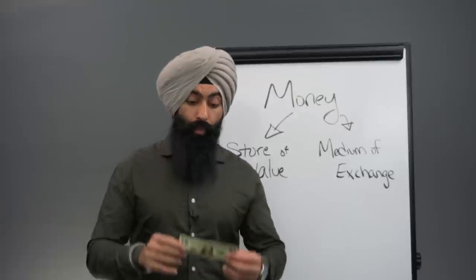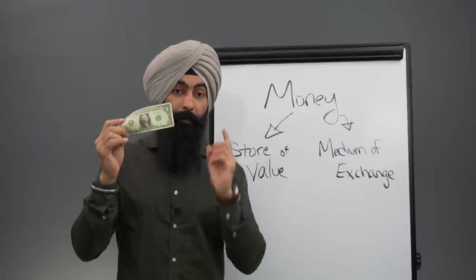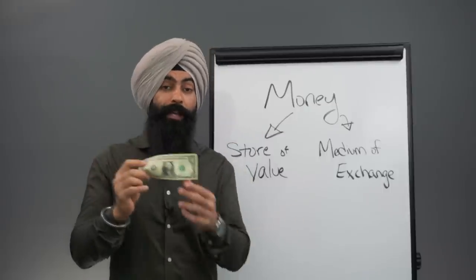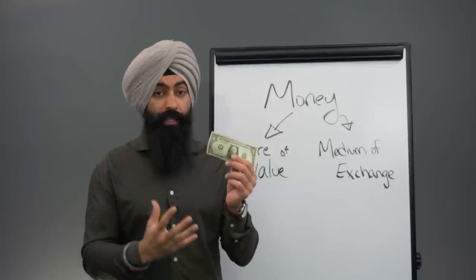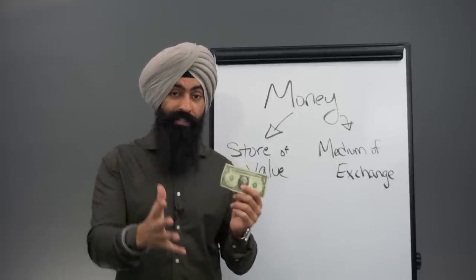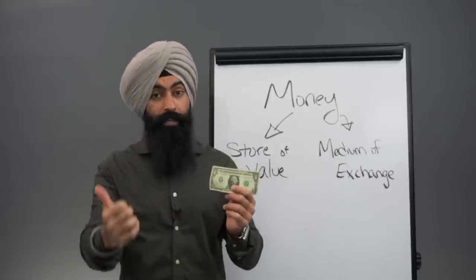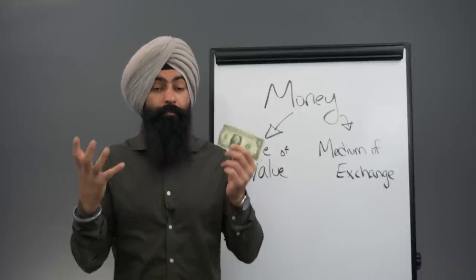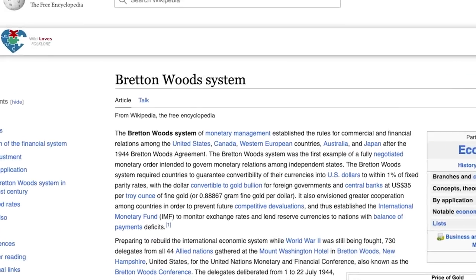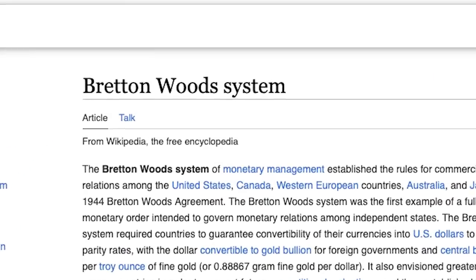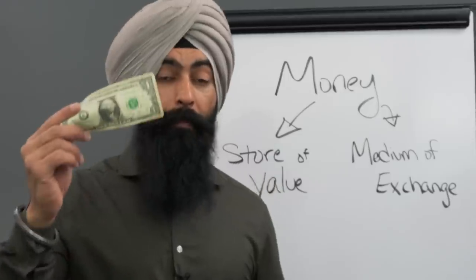Before 1971, our paper dollars were backed by gold. That meant that our governments and our central bank had to have enough gold to represent the amount of dollars out there. If the government wanted to spend more money and the Federal Reserve Bank had to print more money to fund the government spending, they would need more gold to do that printing. By the way, in case you were wondering, this gold-backed system was called the Bretton Woods System of Monetary Management.